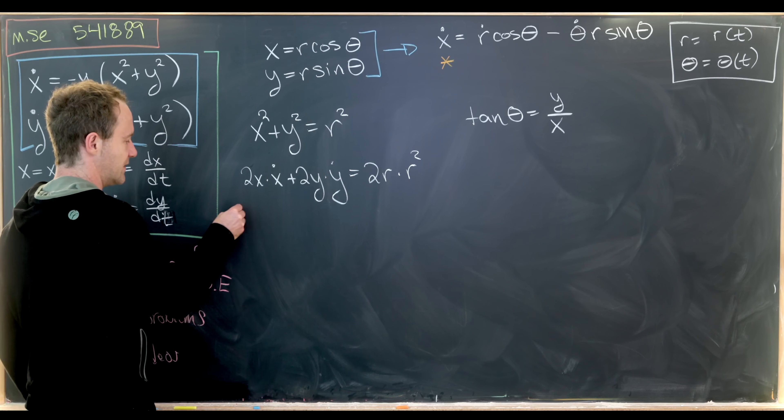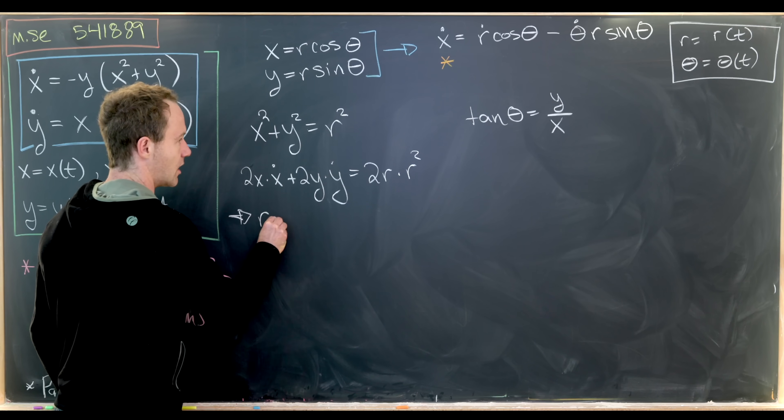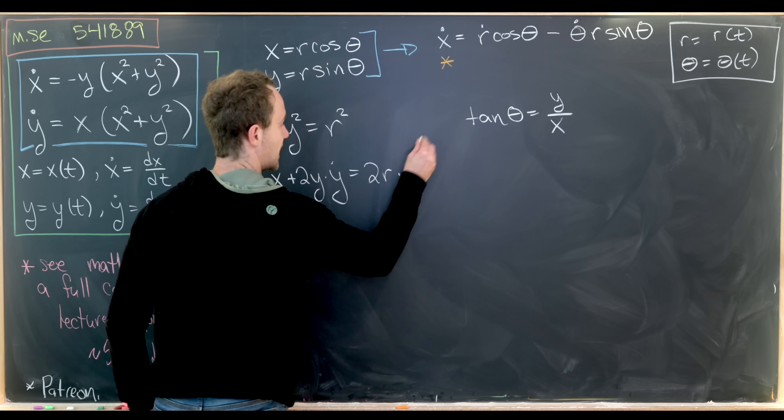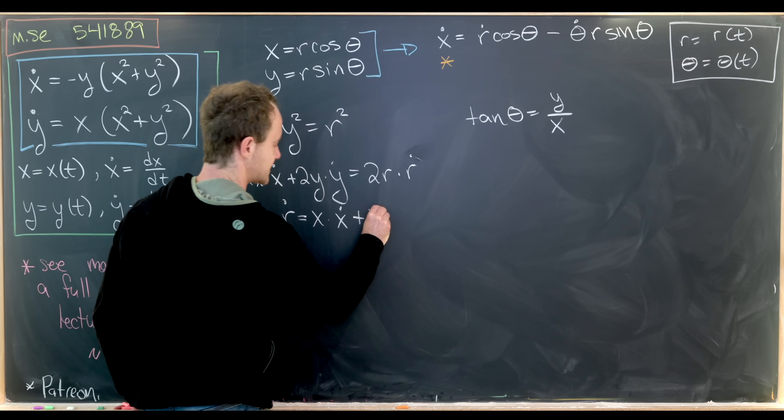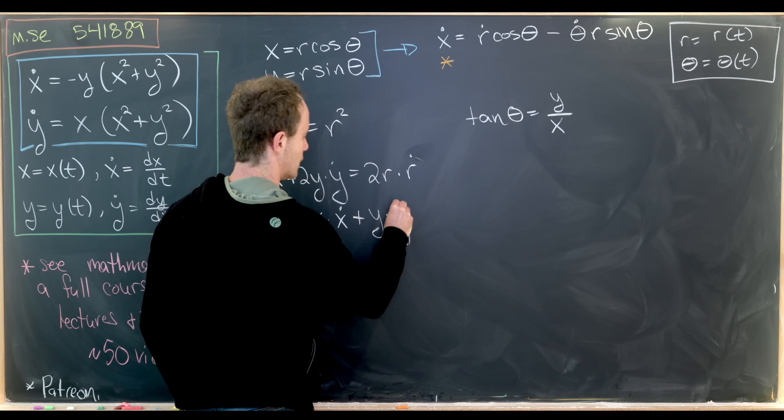Now clearly we can divide by 2. That'll give us r times r dot is equal to x times x dot plus y times y dot.